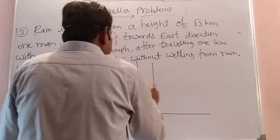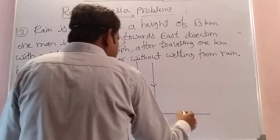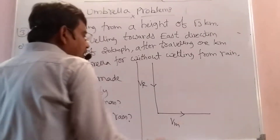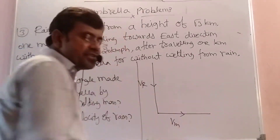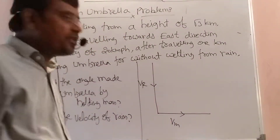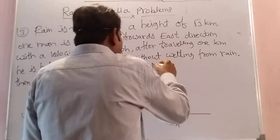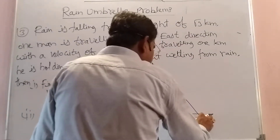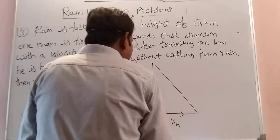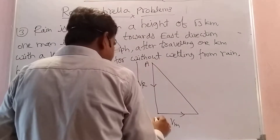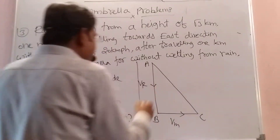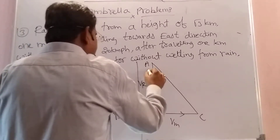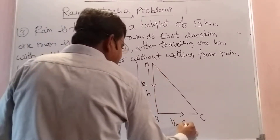This is the velocity of the rain and this is the velocity of the man. After travelling some distance, he is holding the umbrella to avoid getting wet. I am assuming this is the distance. Now here a right angle triangle is created — take it as triangle ABC. The height you take as H, and the travel distance you take as D.